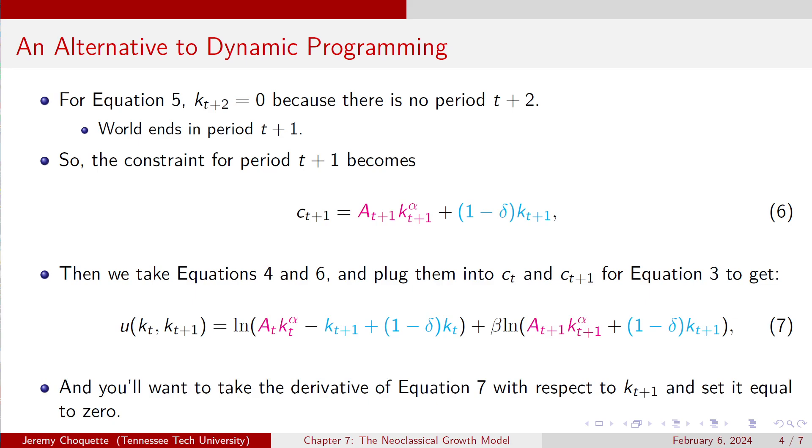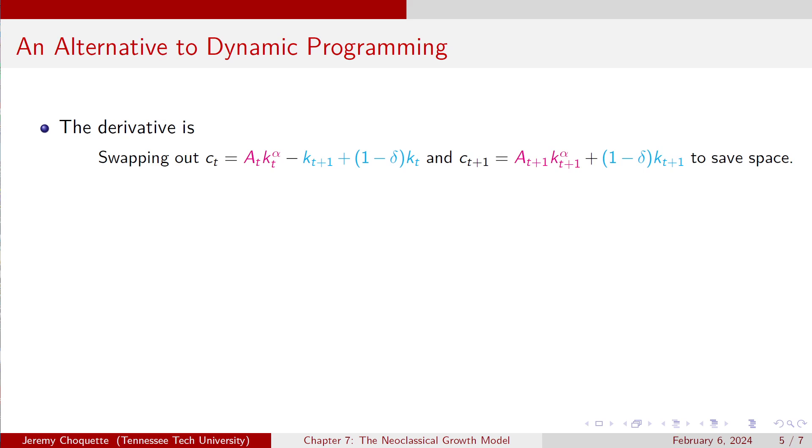Now, from equation 7, you want to take the derivative with respect to kt plus 1 and set it equal to 0. Why are we taking the derivative with respect to kt plus 1? Well, the same reason we are in the lecture on the neoclassical growth model where we did the dynamic programming. The intuition is the same. The thought process is the exact same. It's just the way you're doing the math is a little bit different. So that derivative is, and what I'm doing here is to save space so that this thing will actually fit on the slide. I'm swapping out ct equals that stuff and ct plus 1 equals that stuff to save some space.